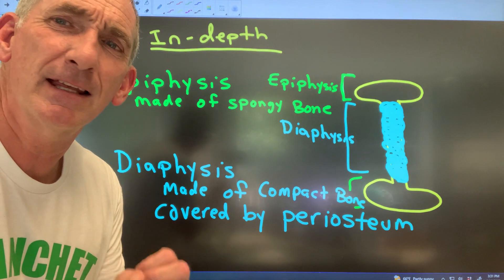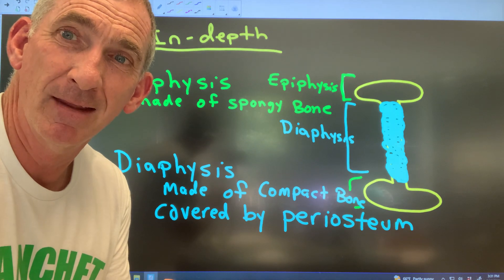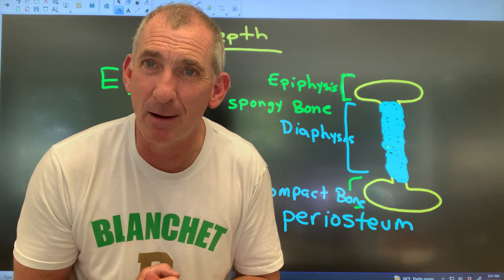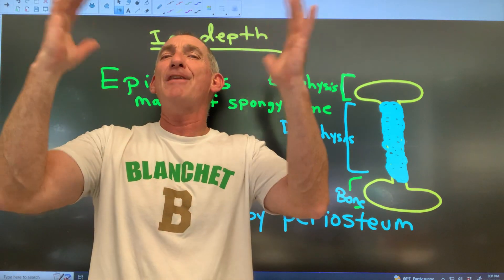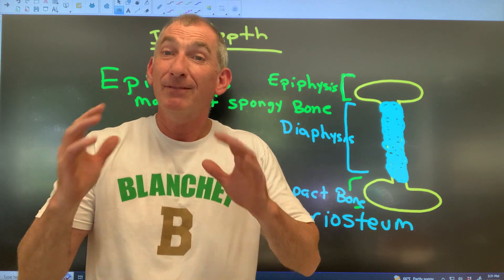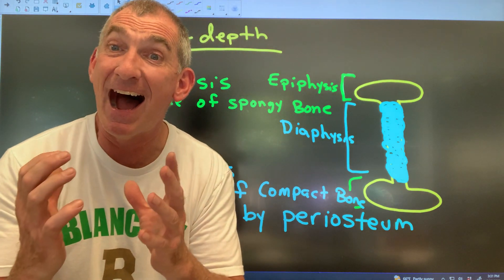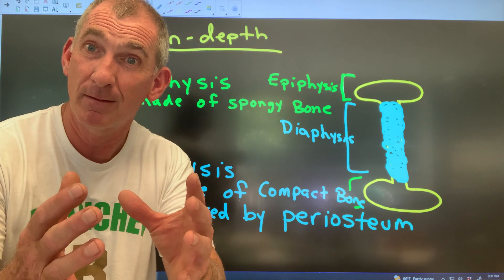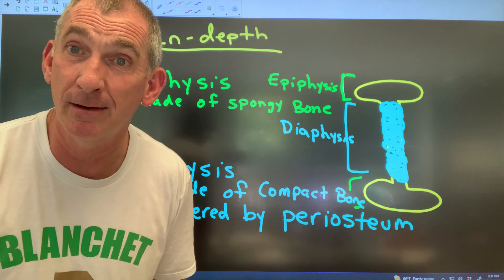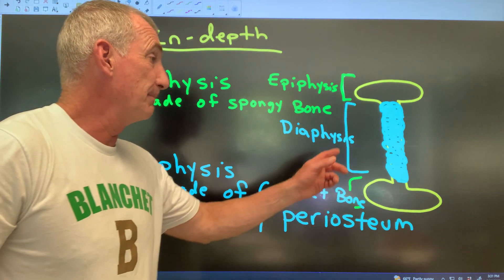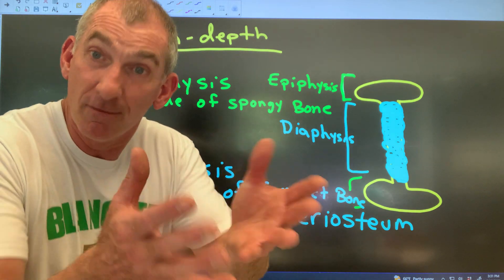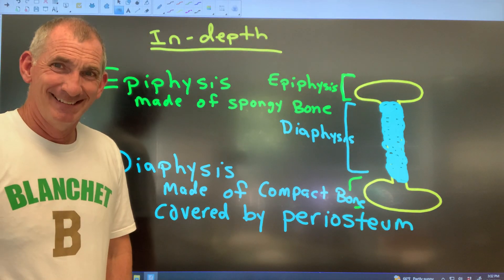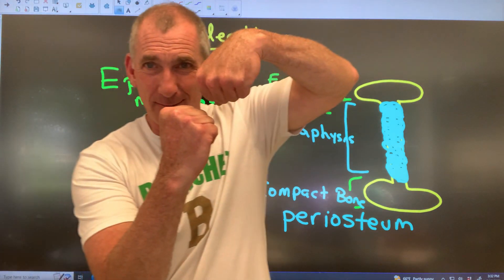The reason everything in your body wants to have a covering is because bacteria would love to invade your body. If bacteria invades, it found heaven. A covering prevents bacteria from going in. You don't hear of a bacterial infection of a bone because the periosteum keeps bacteria from entering the bone.